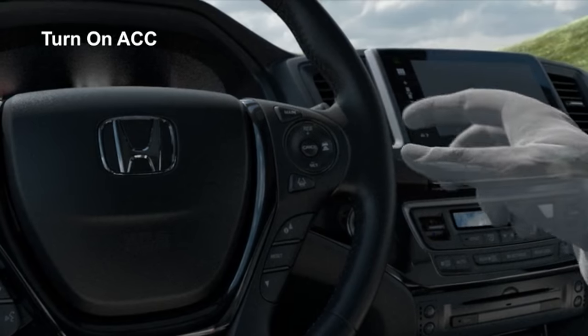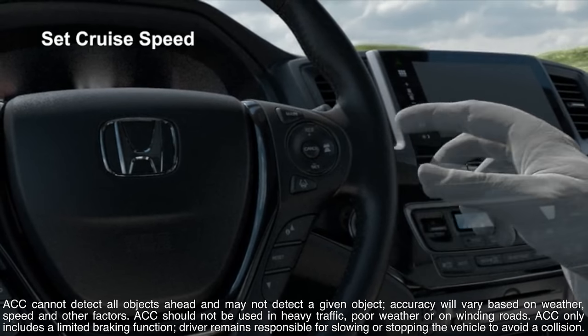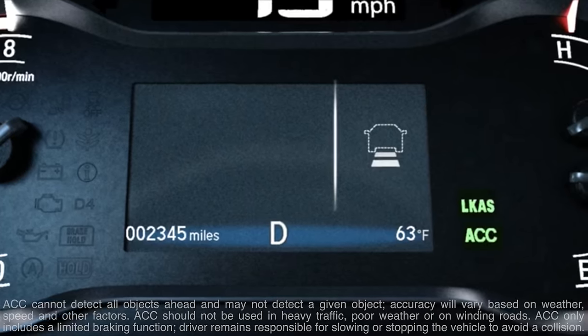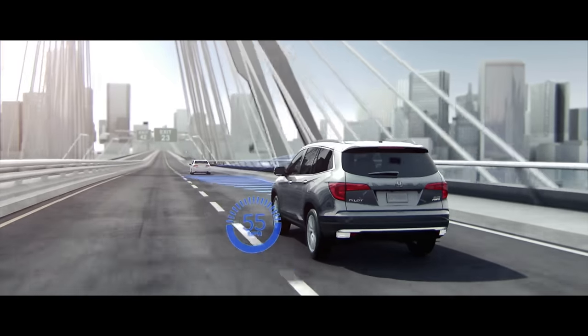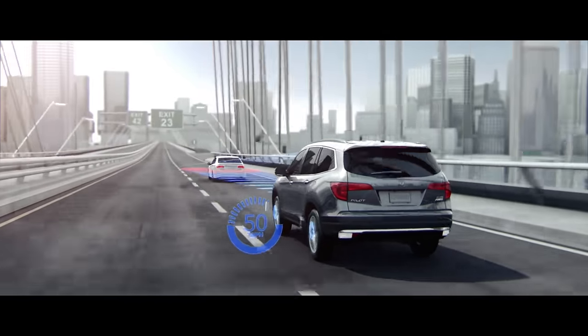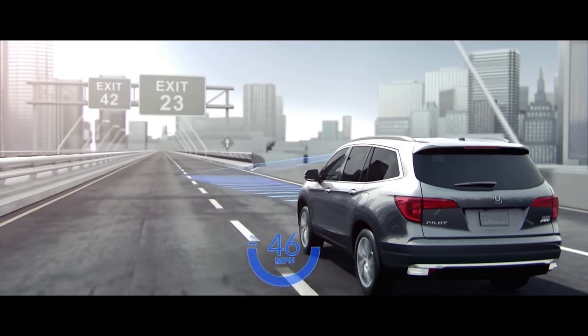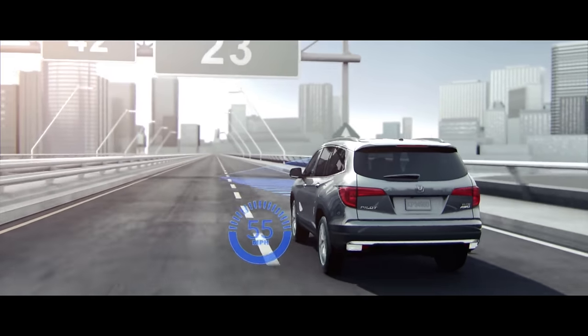So how does adaptive cruise control work? The primary purpose of the system is to travel at the speed selected by the driver, just like traditional cruise control. However, if the vehicle detects another car in front of it that is traveling at a slower speed, the vehicle will reduce its speed to match that of the detected car, and then maintain a selected interval behind the car.